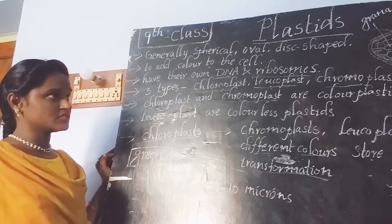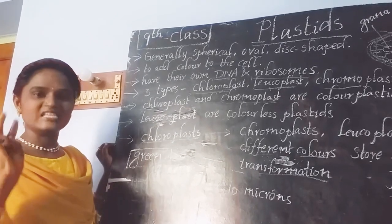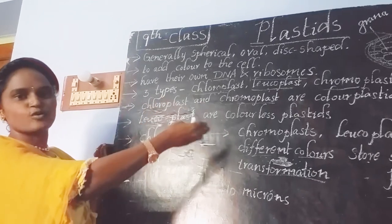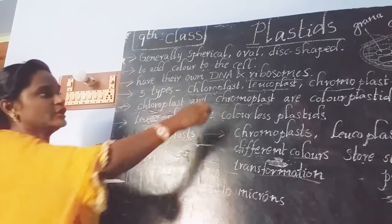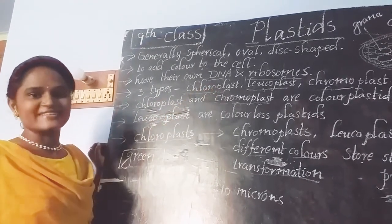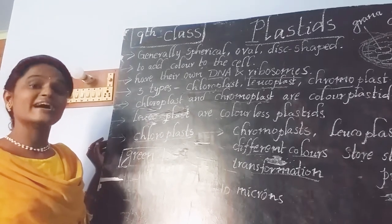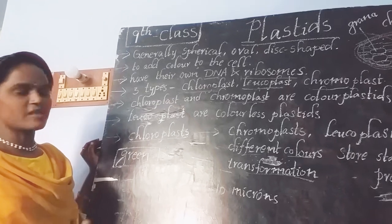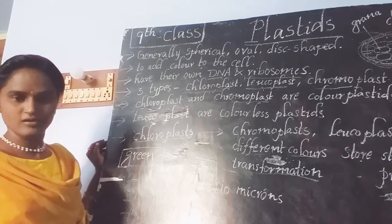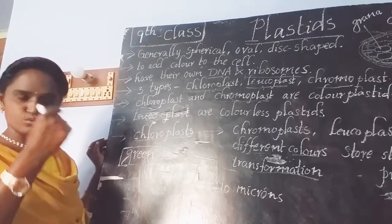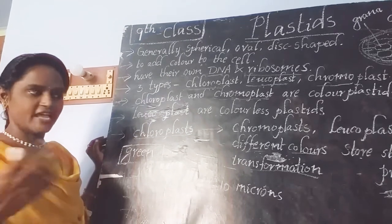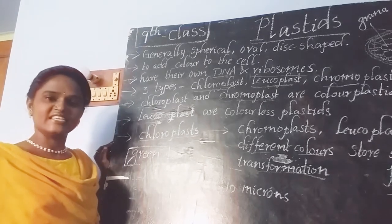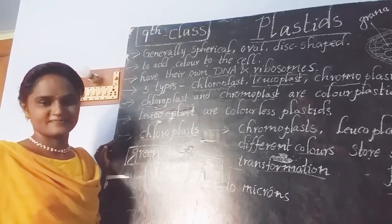To summarize: plastids are of three types — chloroplast, chromoplast, and leucoplast. Chloroplast gives green color; leucoplast is the colorless plastid; and chromoplast gives different colors to the plants, leaves, flowers, and fruits. This is about plastids, and I will meet you in the next class with a new topic.